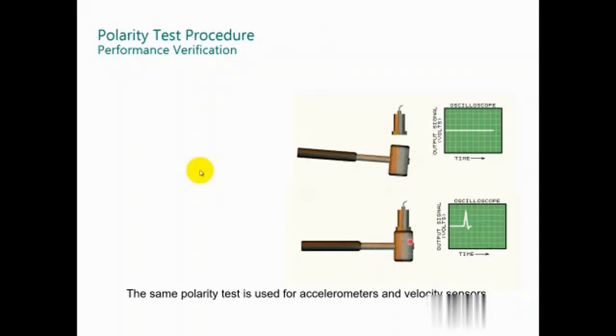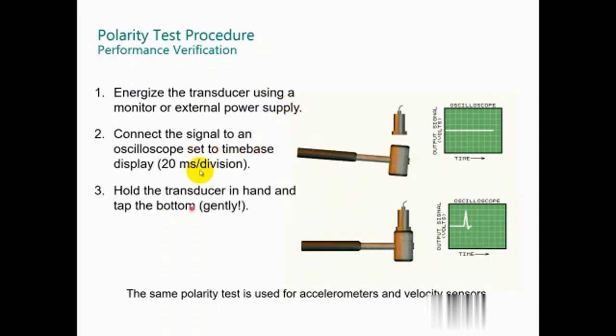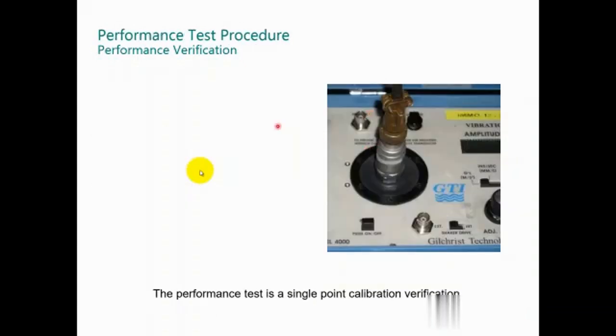The polarity test - you can gently tap the bottom and you can see the output. In this case, if it's positive, that means the positive direction is from bottom to top. Some sensors, the seismometer, have transducer orientation. Some transducers are mounted at 180 degrees, which means from the bottom of the machine.